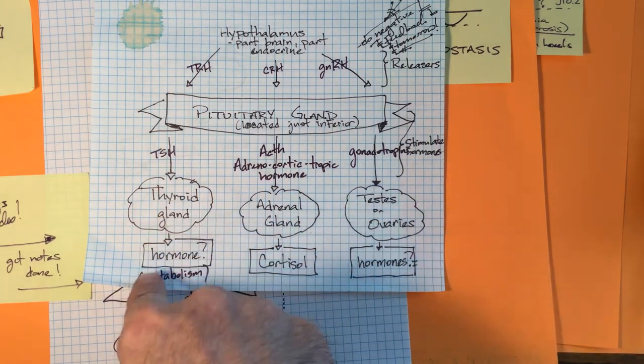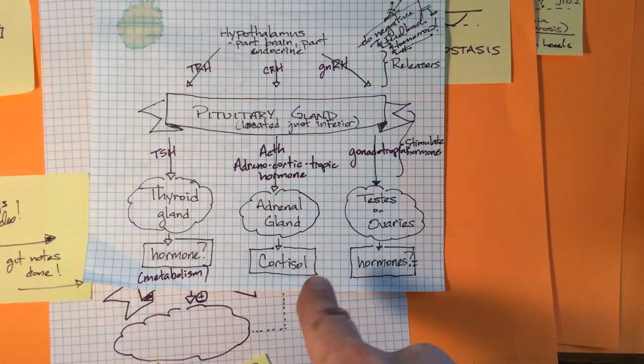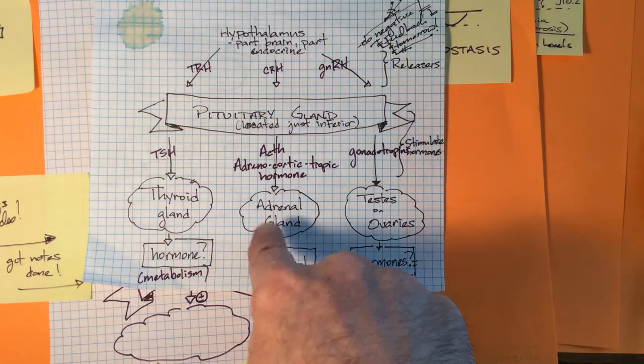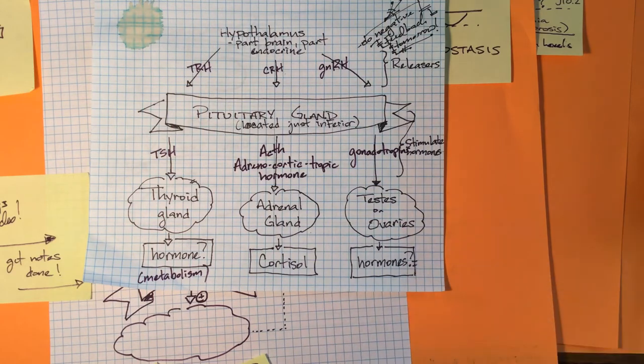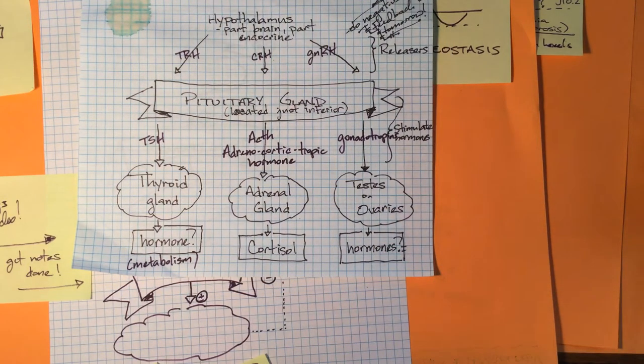So TSH tells the thyroid gland to release thyroxin which speeds up your metabolism like when you're cold, like when the sun goes behind the clouds on a blustery spring day. Or it causes the adrenal glands to release cortisol which happens every morning when you wake up and just face the stress of the day. Or it causes the testes and ovaries to release either estrogen or testosterone. That sort of thing.